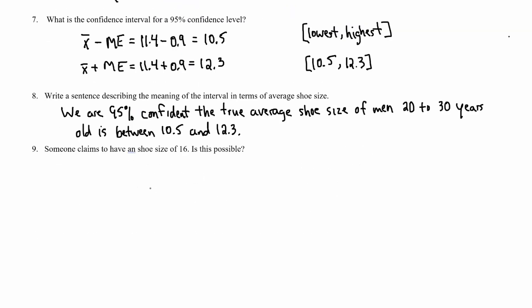And the last question number nine says someone's claiming that a shoe size is 16. Is it possible? Well, based on our confidence interval, we are 95% confident that the true average is between 10.5 and almost 12.5. So this is very unlikely that a shoe size would come up to be 16. However, is it possible? Sure, someone could have the size 16 shoe but it's just very unlikely given our confidence interval calculated above.